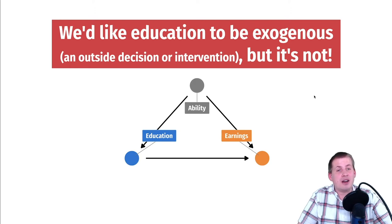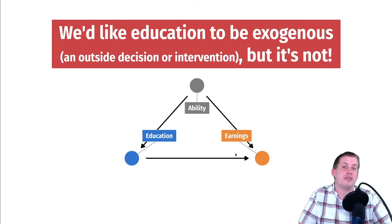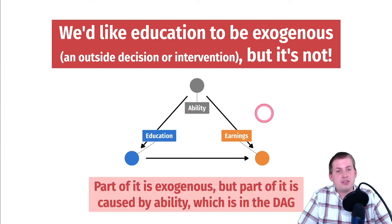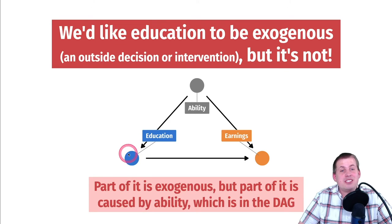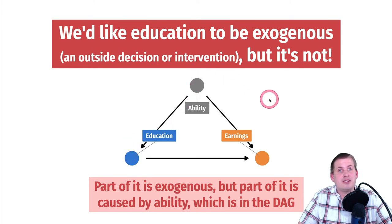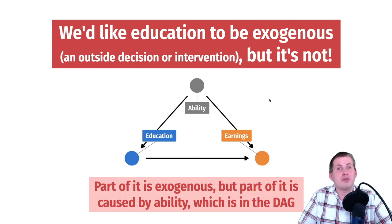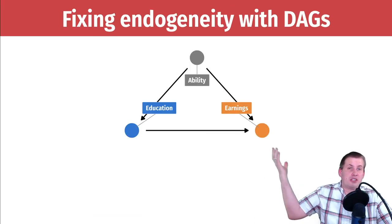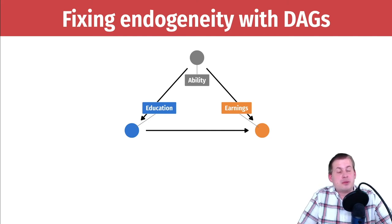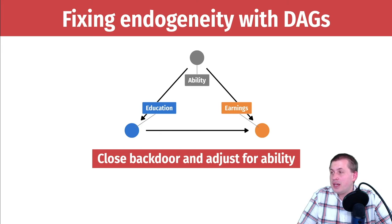Technically, some of the effect on earnings is exogenous — some people might get more education just because they live closer to a university, and that is purely exogenous. But there are also endogenous things: ability is influencing education. So part of education is exogenous and part of it is caused by ability, and that's the endogeneity. What we want to do is somehow remove that endogeneity and only work with the exogenous part. You can do this with DAGs by adjusting for confounding nodes or closing the back doors.